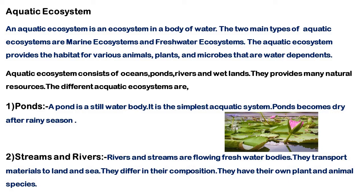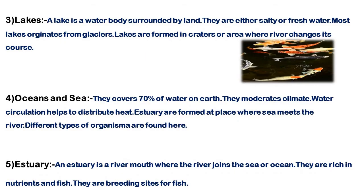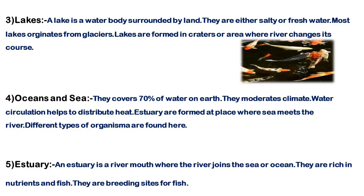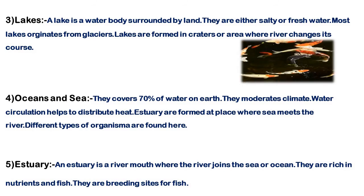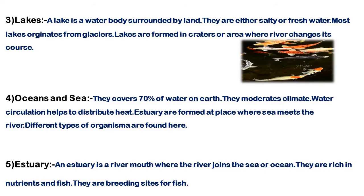The aquatic ecosystem includes ecosystems that come from the rainy season and dry season. Streams and rivers create a flowing ecosystem. Lakes are also an ecosystem — a lake is a water body surrounded by land. Lakes include freshwater lakes, salty lakes, and rocky craters.